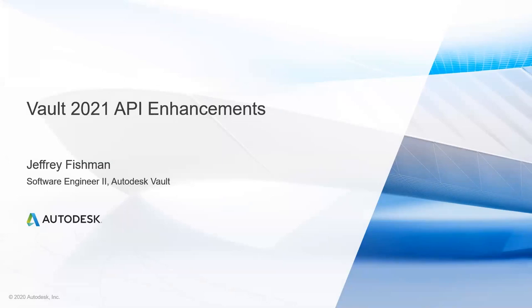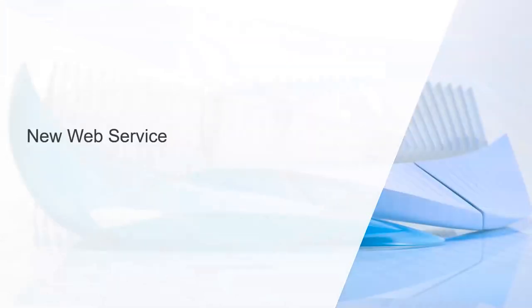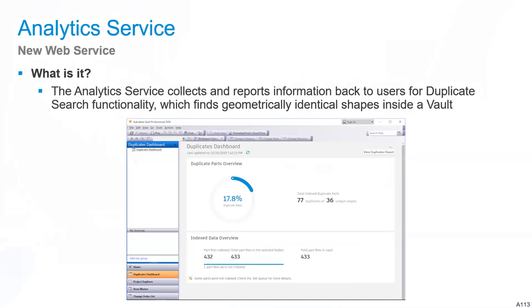Jumping right in — we have a new web service for this year: an Analytics web service. The Analytics web service supports duplicate search functionality. If you haven't been exposed to it previously, it finds geometrically identical shapes inside of a vault.